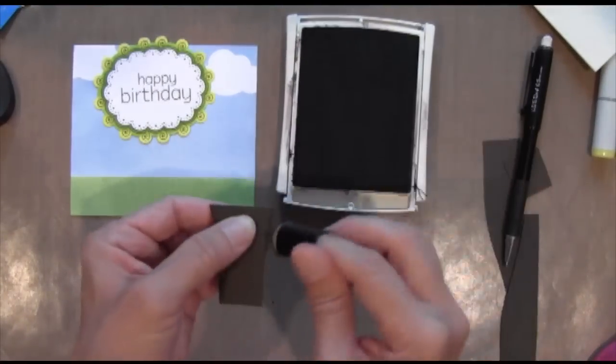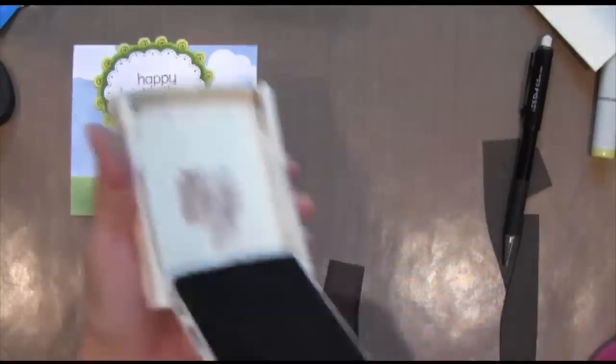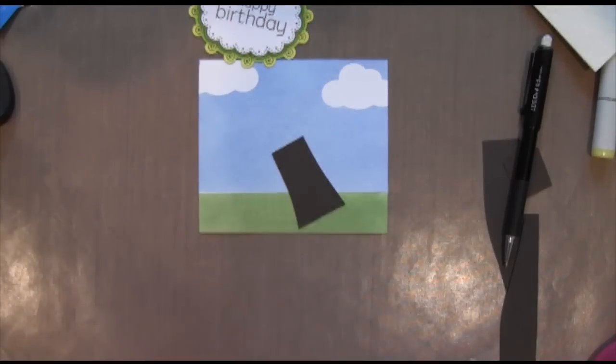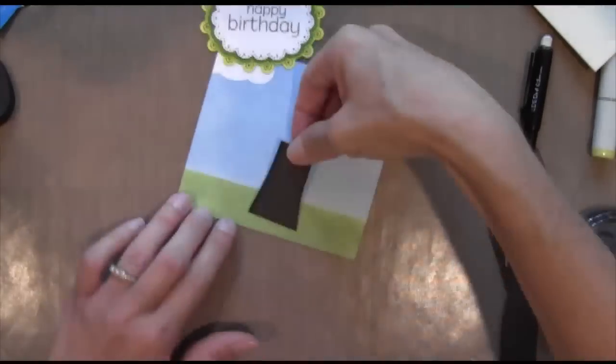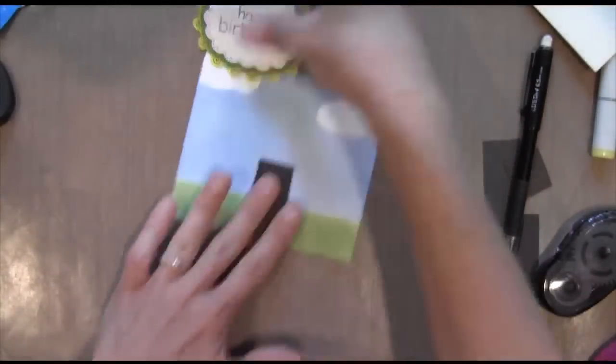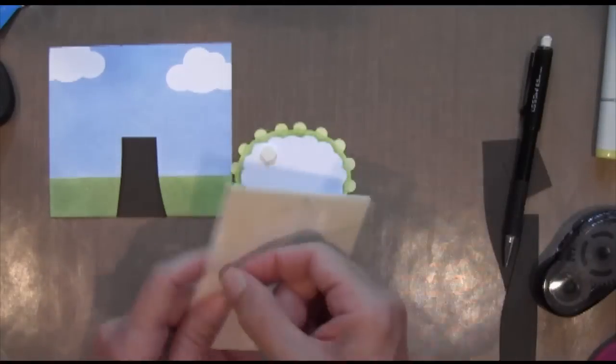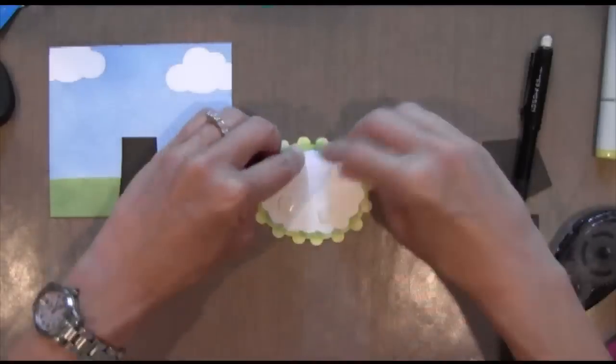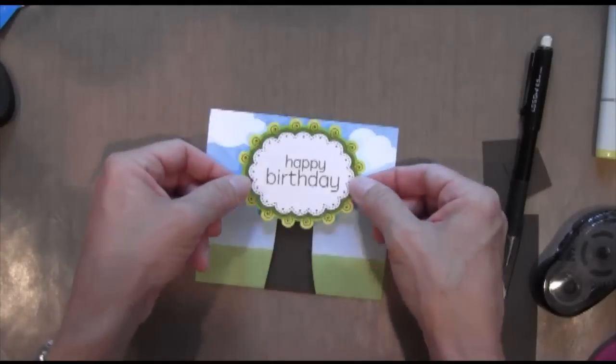I'm going to use a sponge dauber, which is a fingertip ink applicator. And I'm going to ink up the edges with that chocolate chip ink so it gives a little bit more dimension. And this tree trunk is just going to lie flat against the card. And then I'm going to use some foam adhesive dimensionals by Stampin' Up to pop up that top piece.